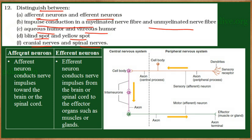The first one is the afferent neuron and the efferent neuron. The word afferent means incoming. These neurons conduct nerve impulses towards the brain and the spinal cord — they carry information towards the central nervous system. Efferent means outgoing; they carry nerve impulses from the brain or the spinal cord to a muscle or a gland.